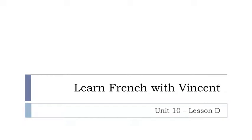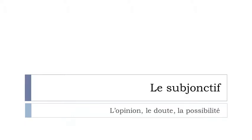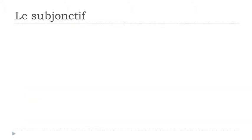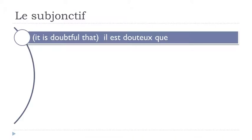Bonjour à tous and welcome to Learn French with Vincent. This is Unité 10, Leçon D. In this video we'll discover together le subjonctif — we'll continue from the previous video. If you want to express l'opinion, le doute, or la possibilité, you will have to use le subjonctif. Opinion, doute means doubt, and possibilité means possibility.